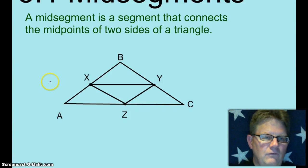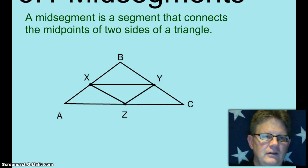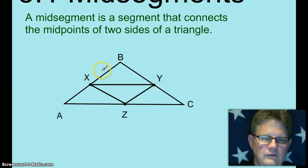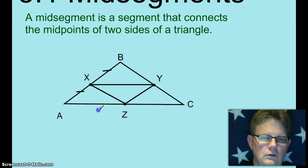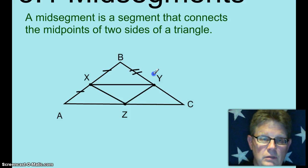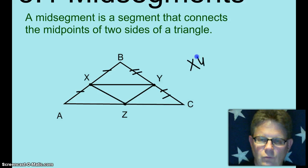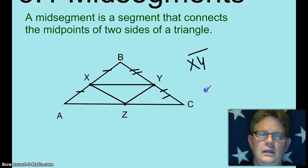So, in order for things to be mid-segments here, we definitely need to have some things telling you that X is a midpoint. If I tick those off with single-tick marks, I'm going to go over here and double-tick mark these, because I don't know if BX and BY are congruent. I'm telling you that X is the midpoint and Y is the midpoint. That makes segment XY a mid-segment.